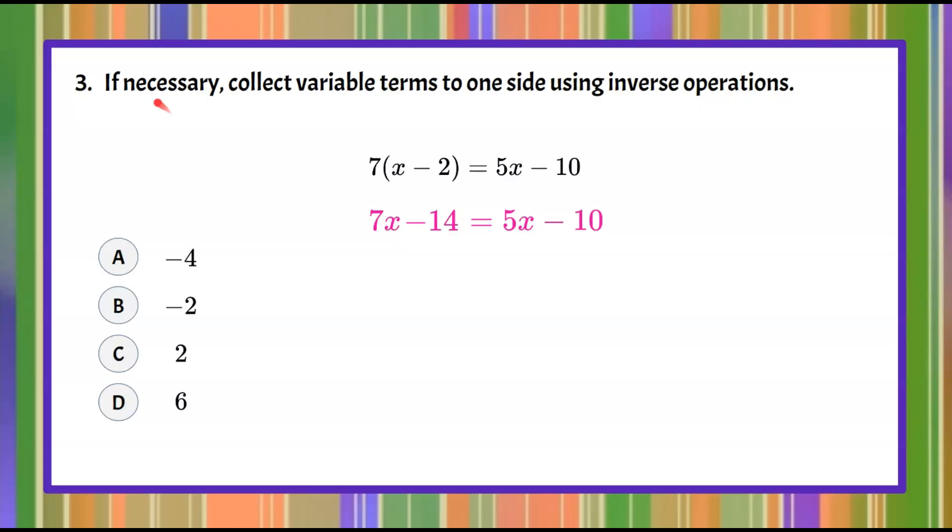Moving on to step three. If necessary collect variable terms to one side using inverse operations. So our whole goal is to get our x's on one side and our numbers on the other. So our algebra, our variable terms and our constant terms in algebraic sense. So let's identify our variable terms which is 7x on the left side and 5x on the right. So we want 5x to go over here. You could bring the 7x over to the right but I'm going to move the variable to the left because this is the larger term so I will avoid a negative sign. So to do that we're going to use inverse operations which means I need to create a zero pair. So the inverse or opposite of 5x is going to be to subtract 5x from each side.